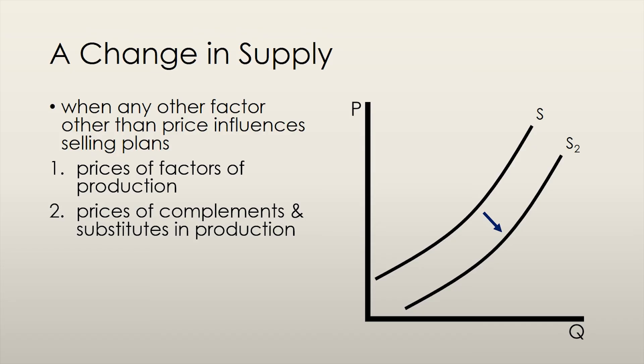Substitutes in production are goods that can be produced by using the same resources. Think about energy drinks and energy bars. A firm has to split up its resources between energy drinks and energy bars. It's not like cowhide and beef where both goods come from the same cow. If the price of energy drinks increases, then the firm wants to increase its quantity supplied of energy drinks. Thus, it will reduce the supply of energy bars and use those resources to produce energy drinks. In this case, the supply of energy bars shift to the left.